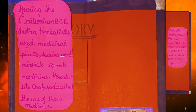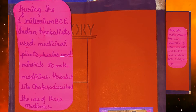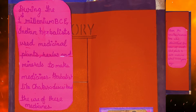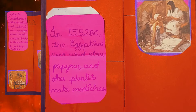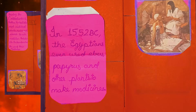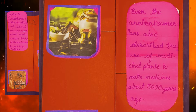During the first millennium BCE, Indian herbalists used medicinal plants, herbs and minerals to make medicines. Herbalists like Charaka described the use of these medicines. During 1552 BC, the Egyptians used the Ebers Papyrus and other plants to make medicines. The ancient Sumerians also described the use of medicinal plants about 5000 years ago.